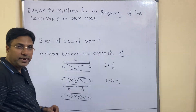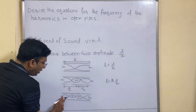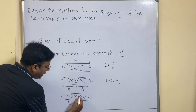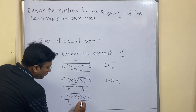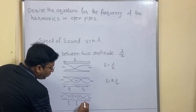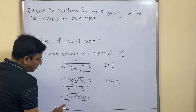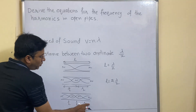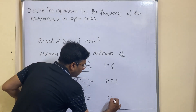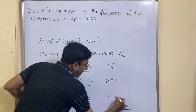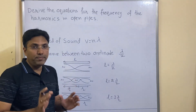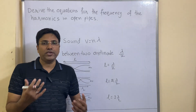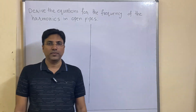In the third pipe, from antinode to antinode is one lambda by 2, again antinode to antinode is a second lambda by 2, and antinode to antinode is a third lambda by 2. So the total length L is equal to 3 lambda by 2. If you remember these basics, then the derivation will become very easy.